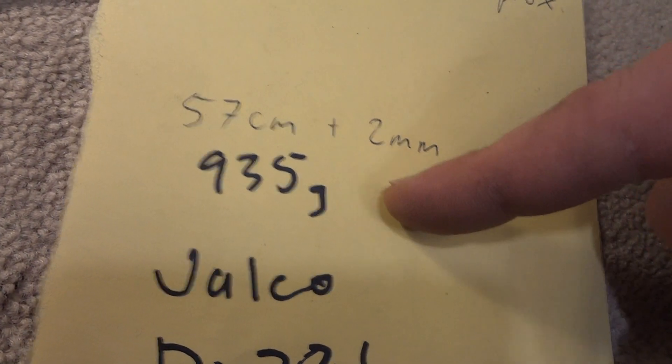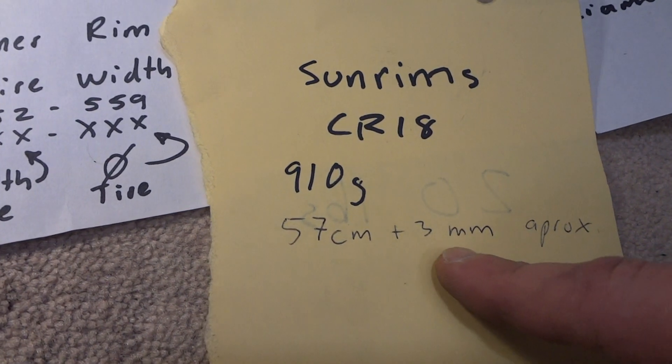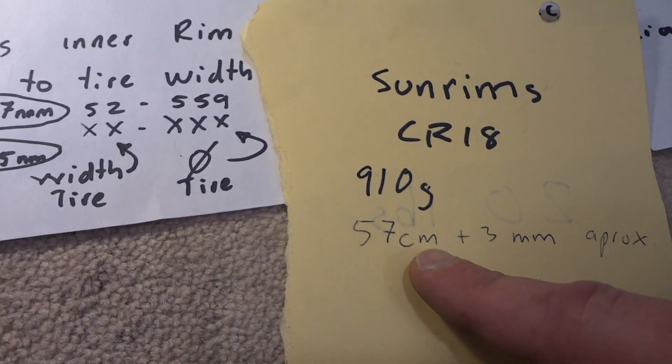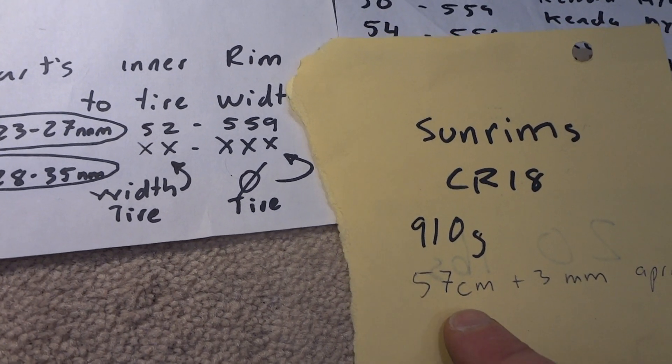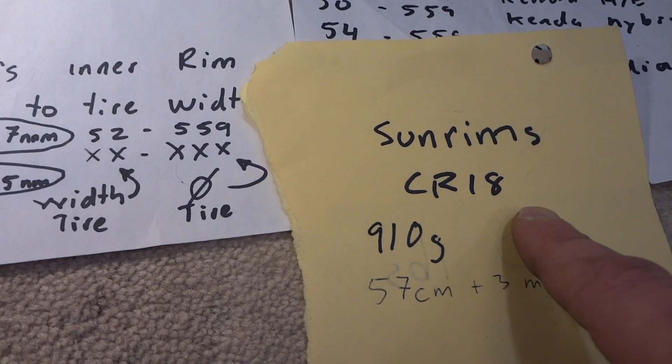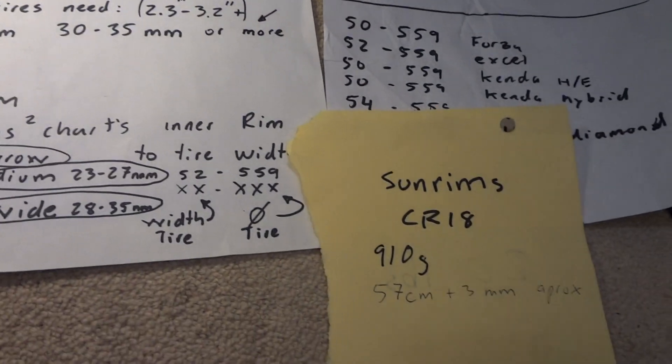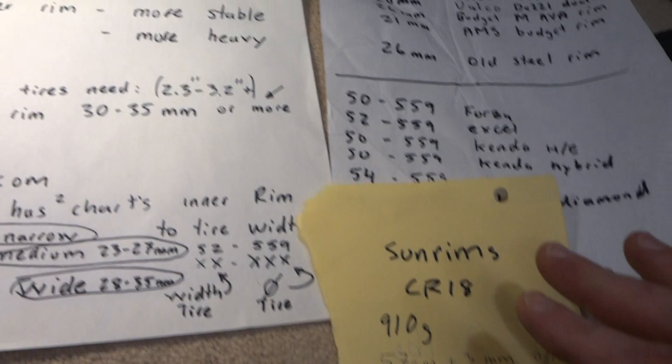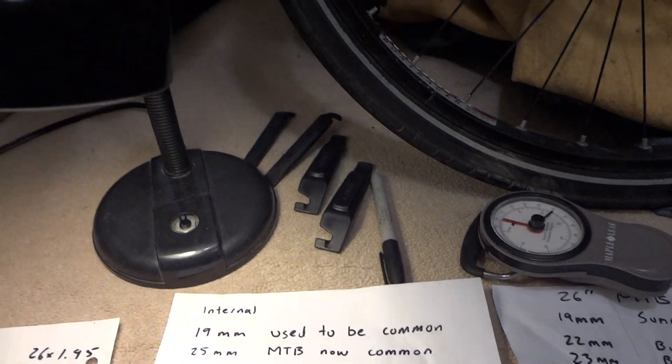In this case, this is where we ran into a problem. This one was like three millimeters more than 57 centimeters, so that's why the tire is really hard to put on a rim like that. So that's the Sunrims CR 18 with the Shimano hub I have right here. Every other tire, there is no issue. You don't need the tire levers, you just put it on with your hands without any problems.